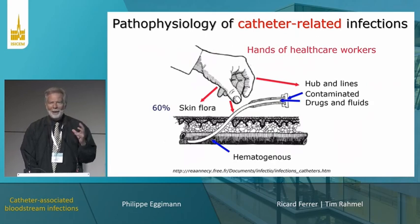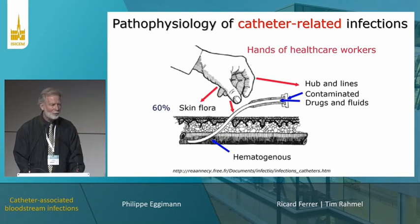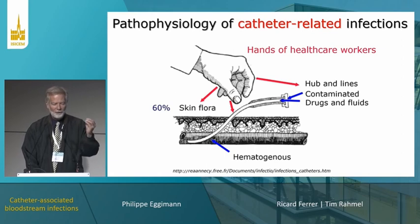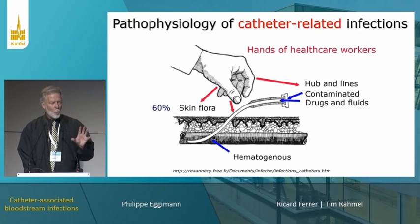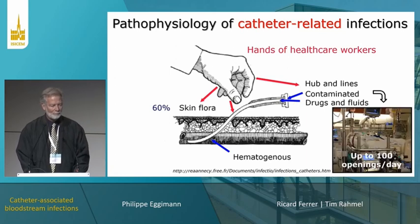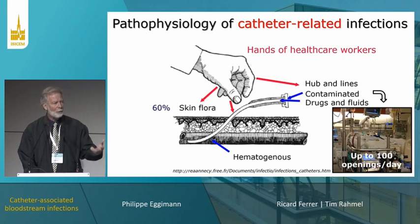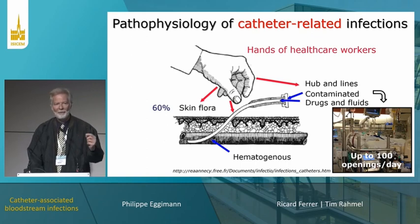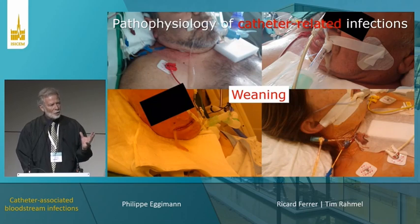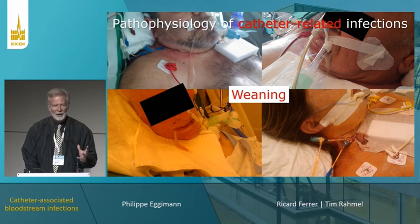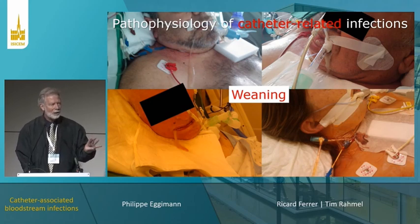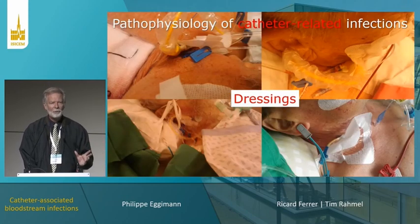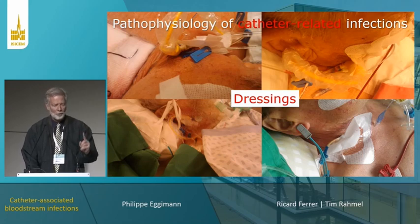We should first understand the pathophysiology. Regarding catheter-related infection, our hands and handling of catheters contaminate the device, which becomes the source for infection development. We may have more than 100 hub and line openings per day in very severe patients — each opening is an opportunity to contaminate the device and bloodstream. Additionally, weaning patients from mechanical ventilation is dangerous because saliva goes directly to the catheter insertion site, and dressings are very difficult to maintain.